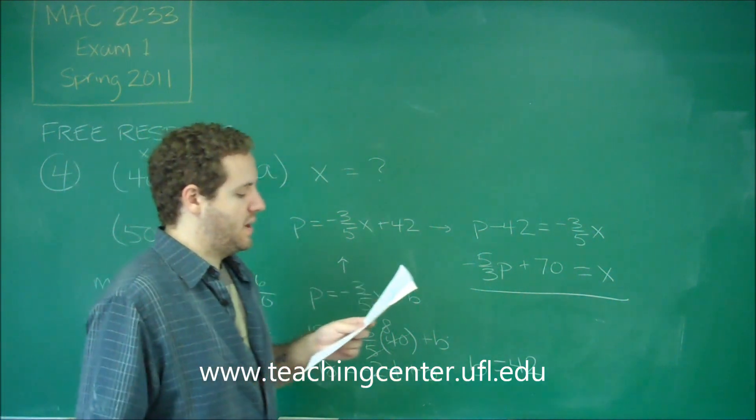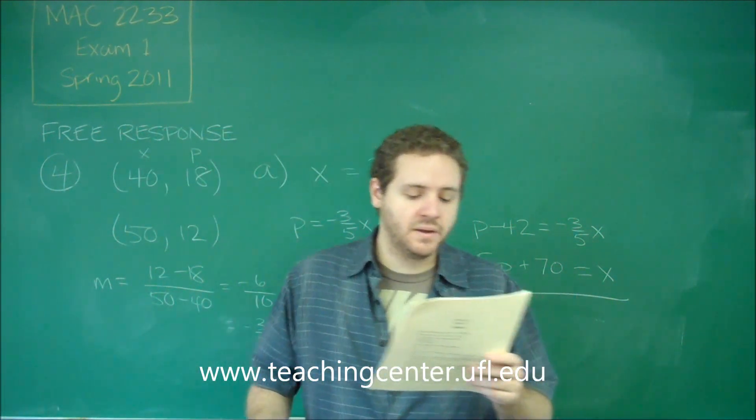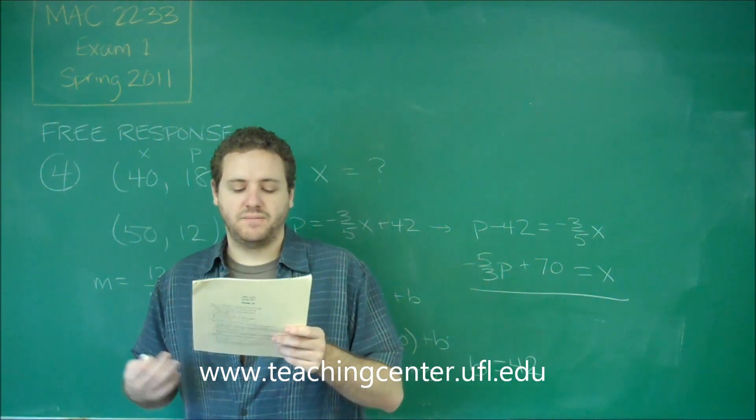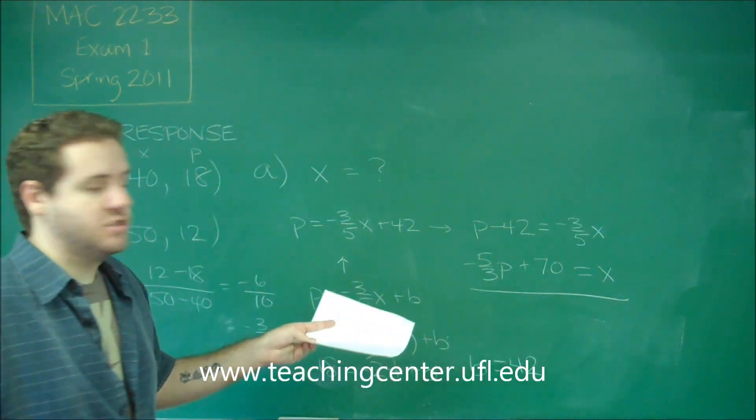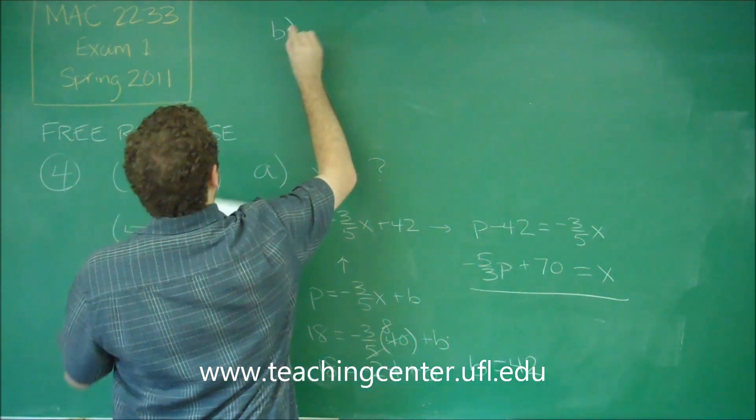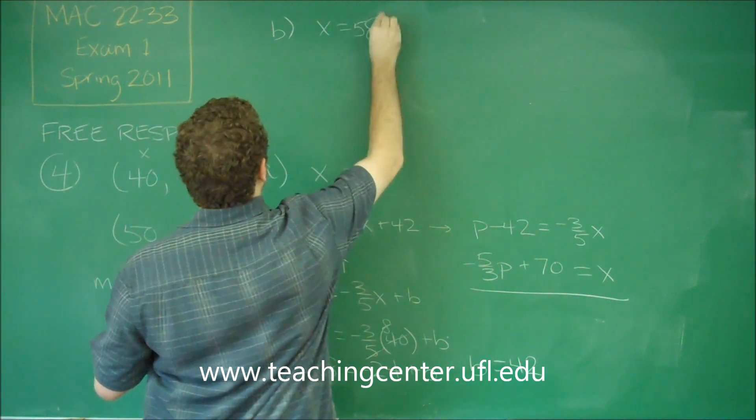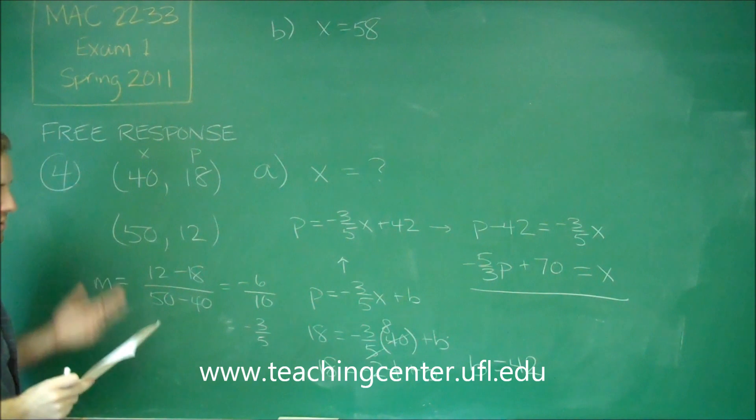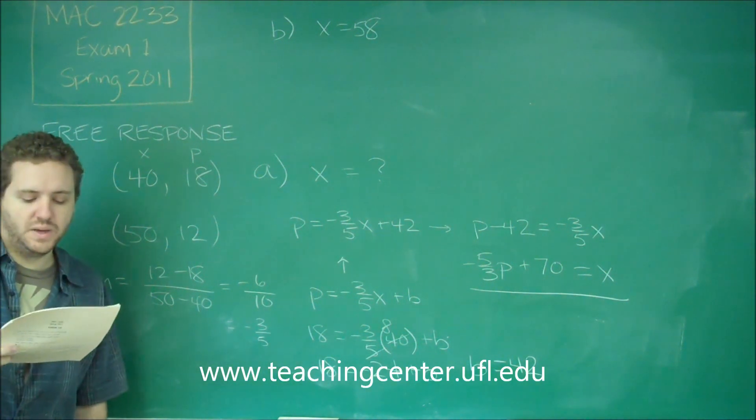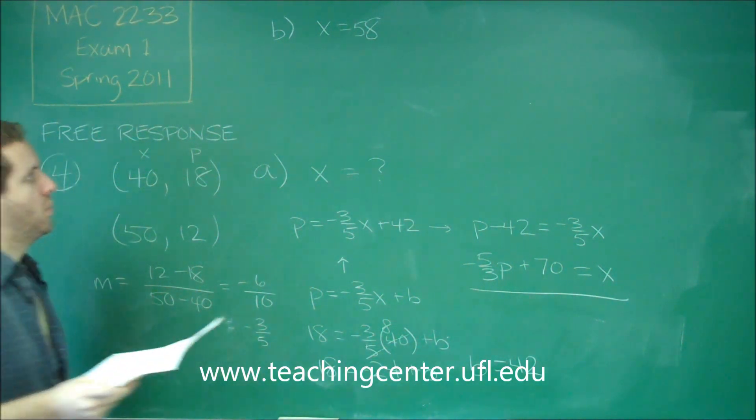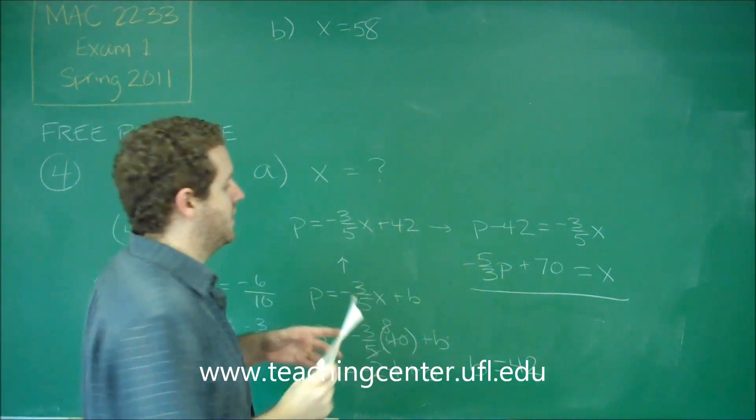For letter B, it says, one week, the manager sold 58. Find the price. And we can do that just using this function. Letter B says, X equals 58. Remember, X is the number of things we sold. And in one week, he sold 58.